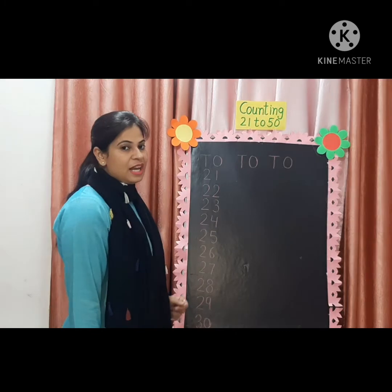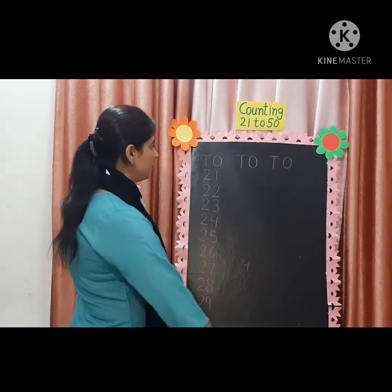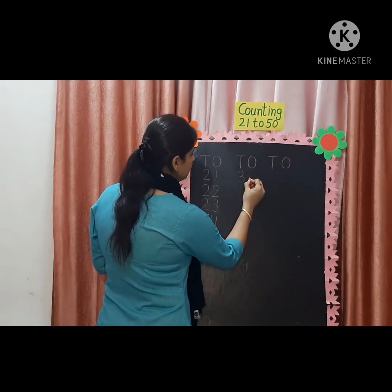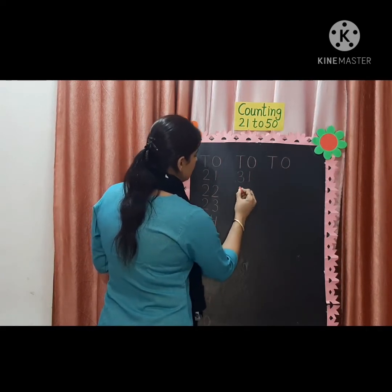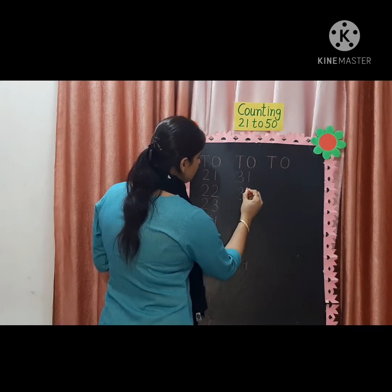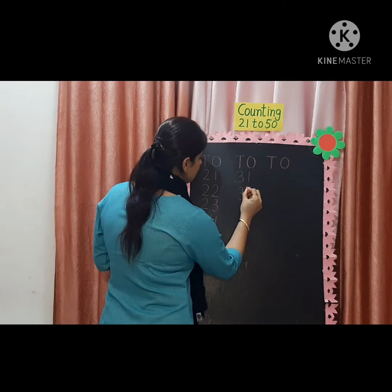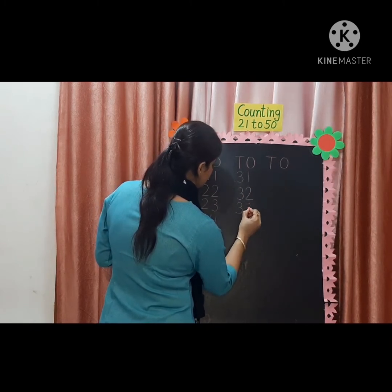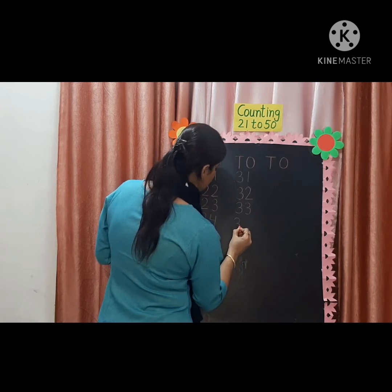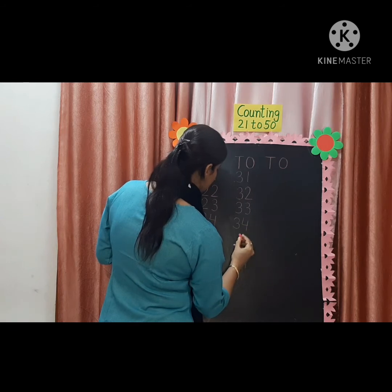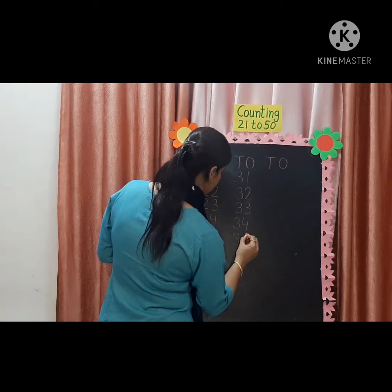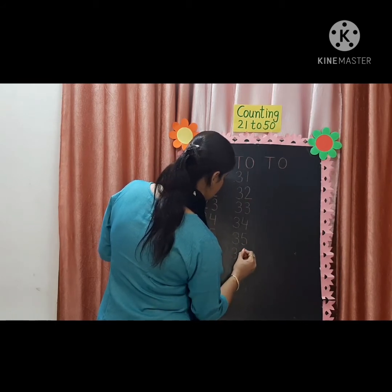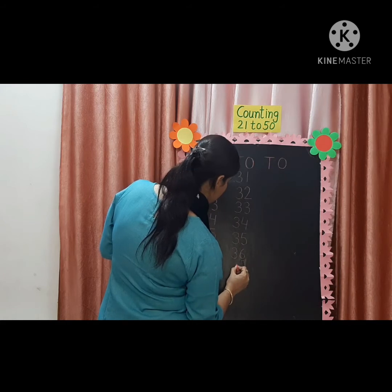Then 3, 0 — 30. Our next line. 3, 1 — 31. 3, 2 — 32. 3, 3 — 33. 3, 4 — 34. 3, 5 — 35. 3, 6 — 36. 3, 7 — 37.